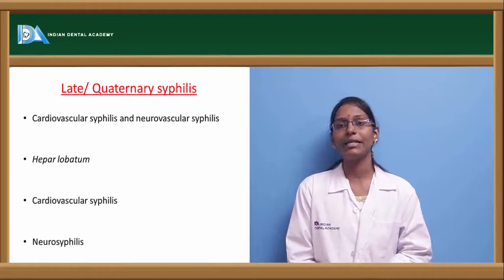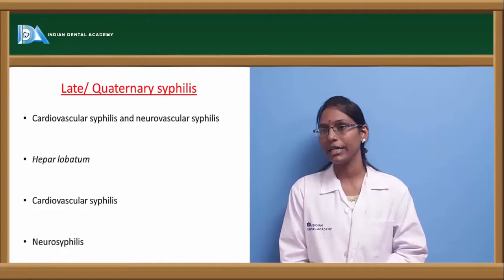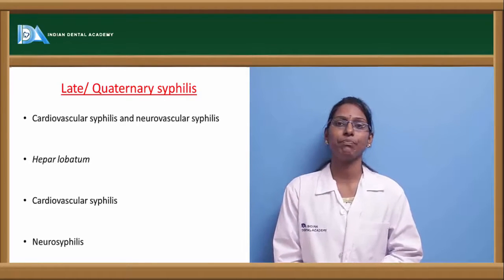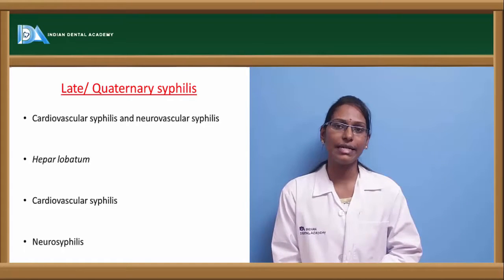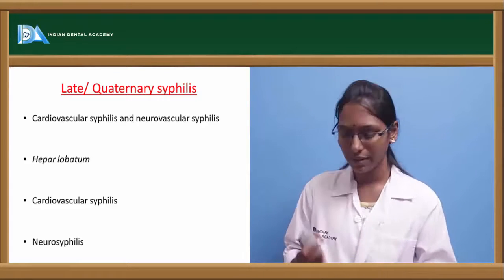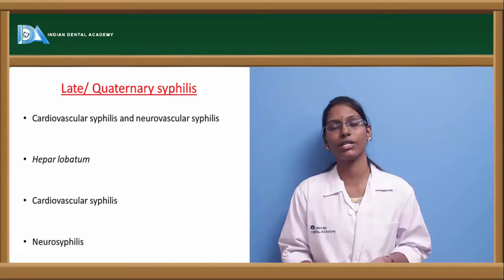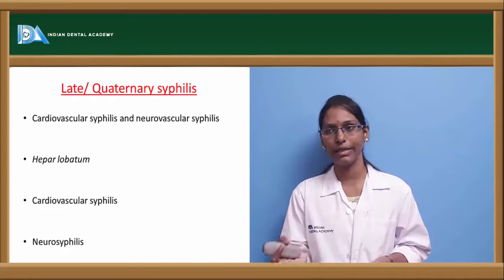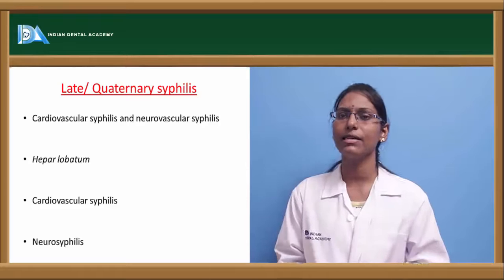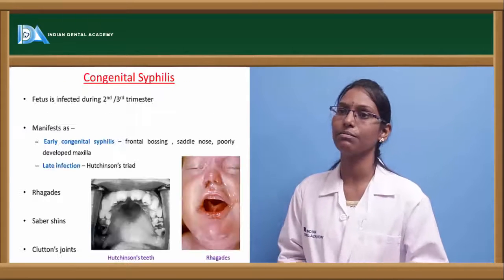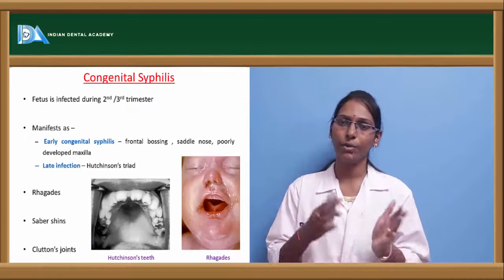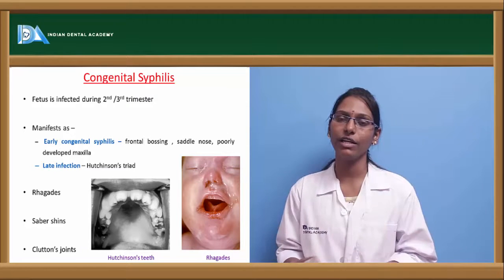The final stage, quaternary or late syphilis, involves multiple systems. Manifestations include cardiovascular syphilis, hepar lobatum affecting the liver, neurosyphilis, and other conditions that are potentially fatal if untreated.